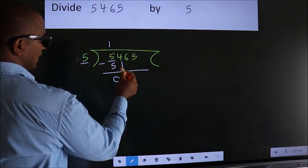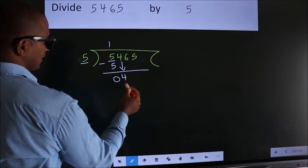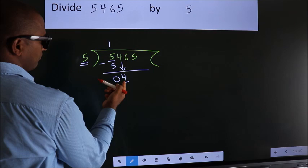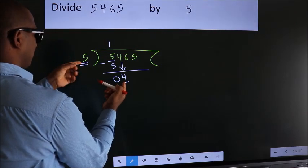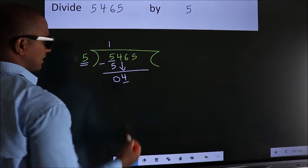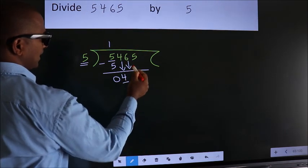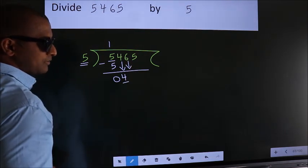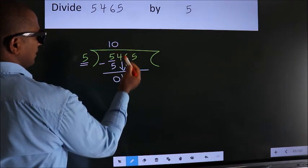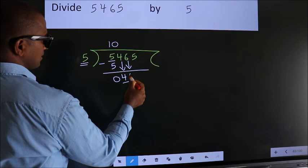After this, bring down the beside number. So, 4 down. Here we have 4. Here 5. 4 smaller than 5. So, we should bring down the second number. And the rule to bring down second number is put 0 here. Then only we can bring down this number.